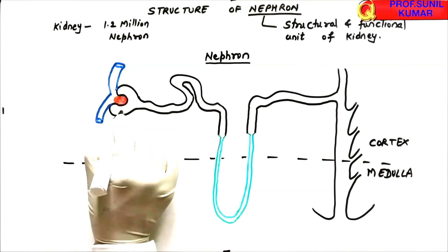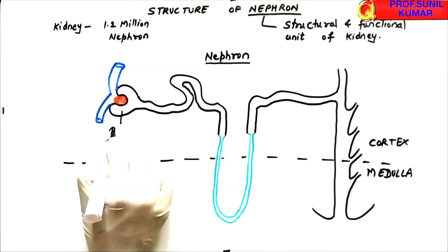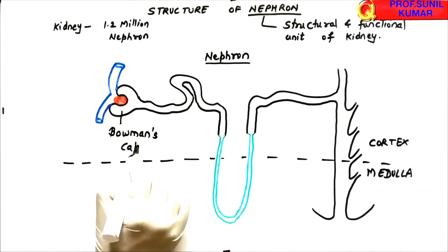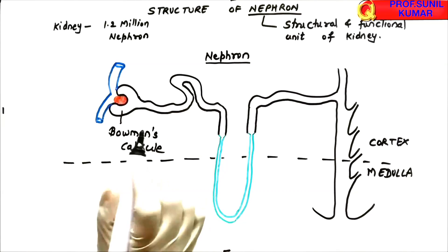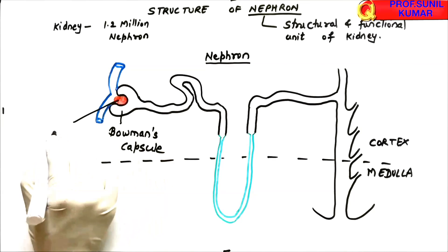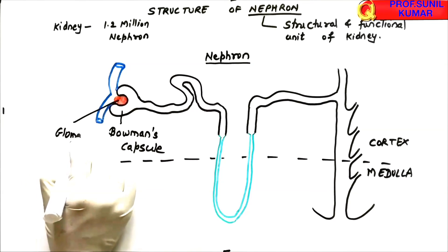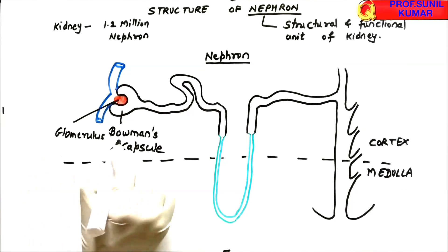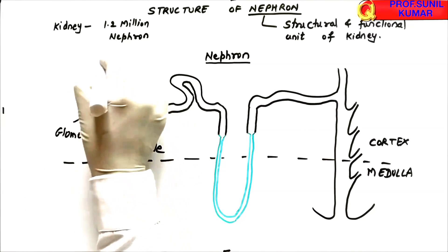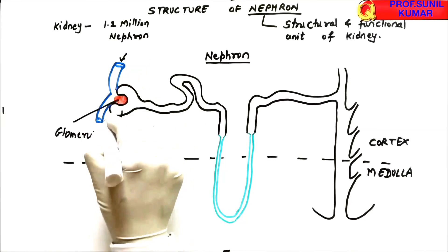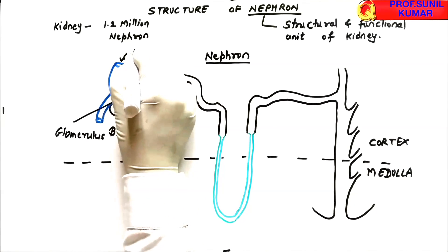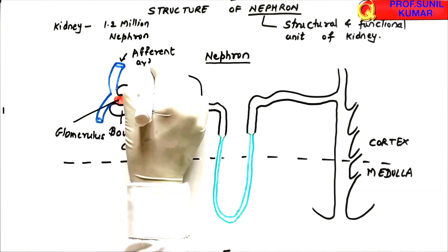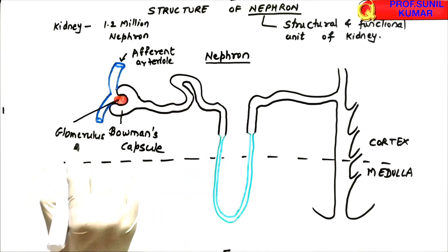Now let's label the nephron. First, the Bowman's capsule — it is a cup-shaped or C-shaped structure and is a blind tubule, open at one end only. The red part in the center is the glomerulus, which is a dense network of blood capillaries that helps in the filtration of blood and formation of the glomerular filtrate.